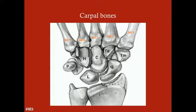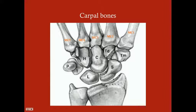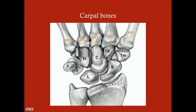I like to divide the eight carpal bones into two groups of four: proximal and distal. The proximal four are closer to the forearm — the ulna and radius. The distal four come into contact with the metacarpals, which form the hand.